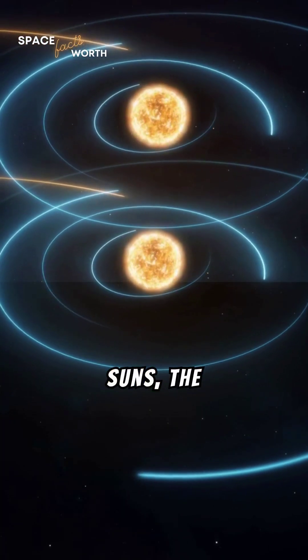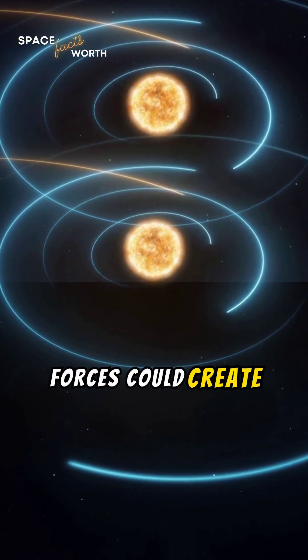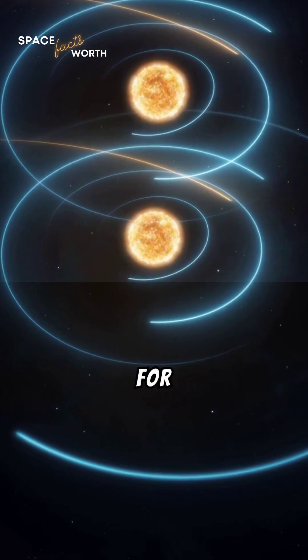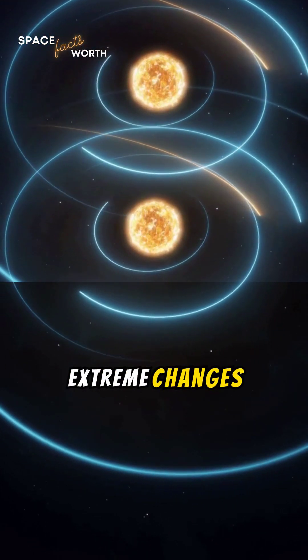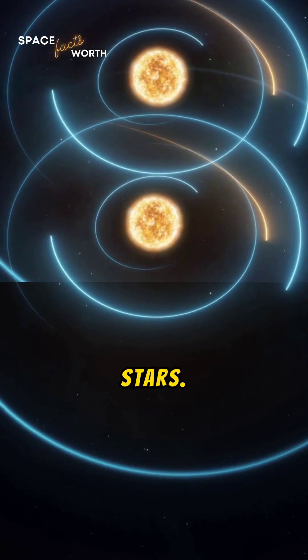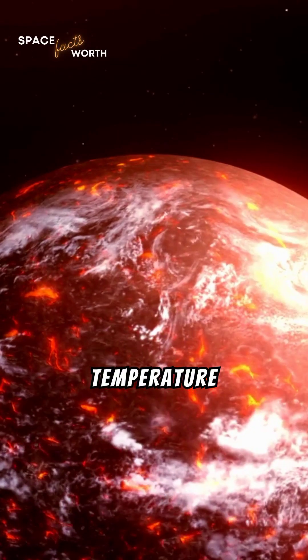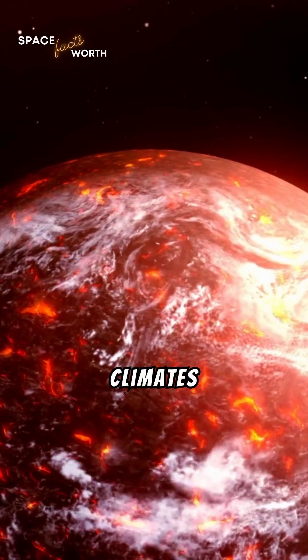With multiple suns, the combined gravitational forces could create erratic orbital paths for planets, leading to extreme changes in distance from the stars. This would cause wild temperature fluctuations, making stable climates unlikely.